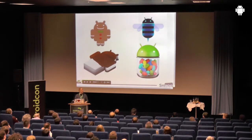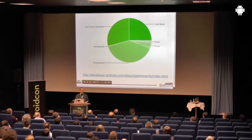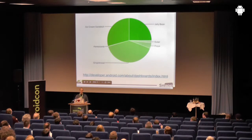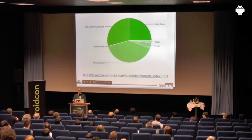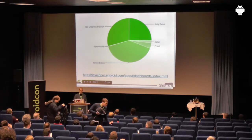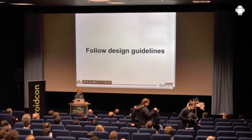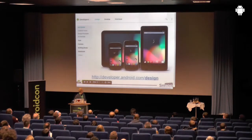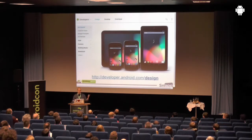Google took a step in the right direction by calculating Android version numbers differently — now only people who manually go to Google Play Store appear in the chart. That inflated Jelly Bean and ICS numbers a bit more. I personally think ICS Plus is most of the applications being installed, because old phones are so poor that people don't want to install anything on them. Follow the guidelines — Google has given us design guidelines. Read those; they're really easy to read and worth going through every single page.